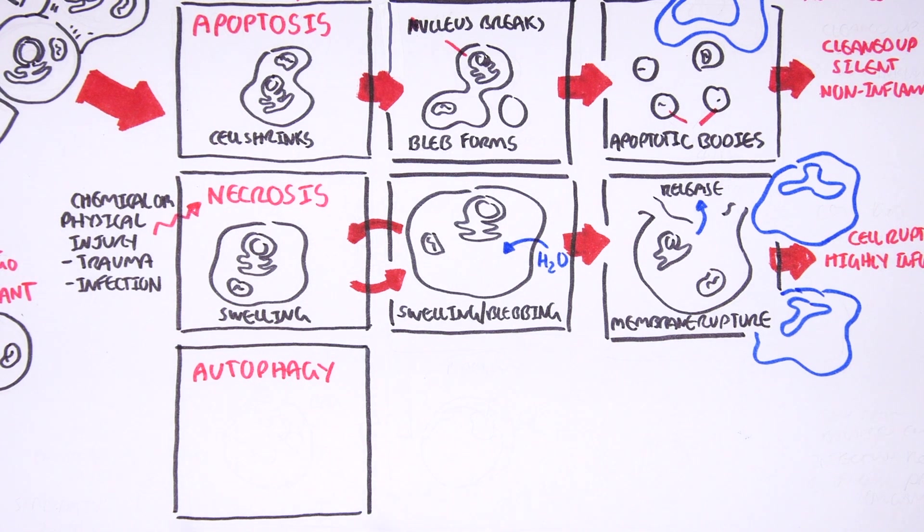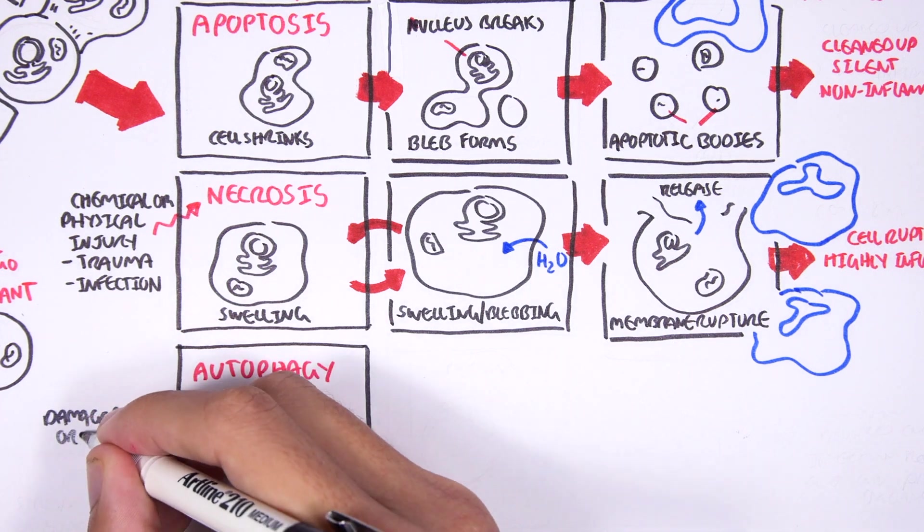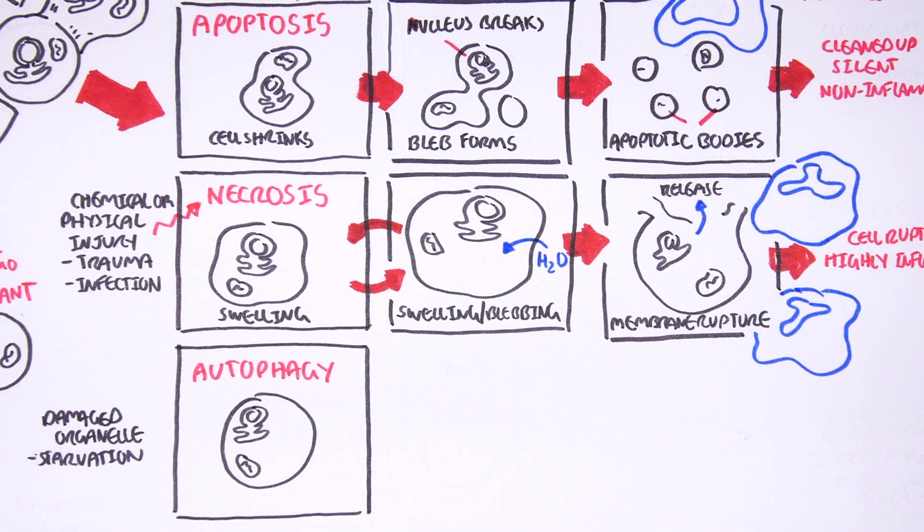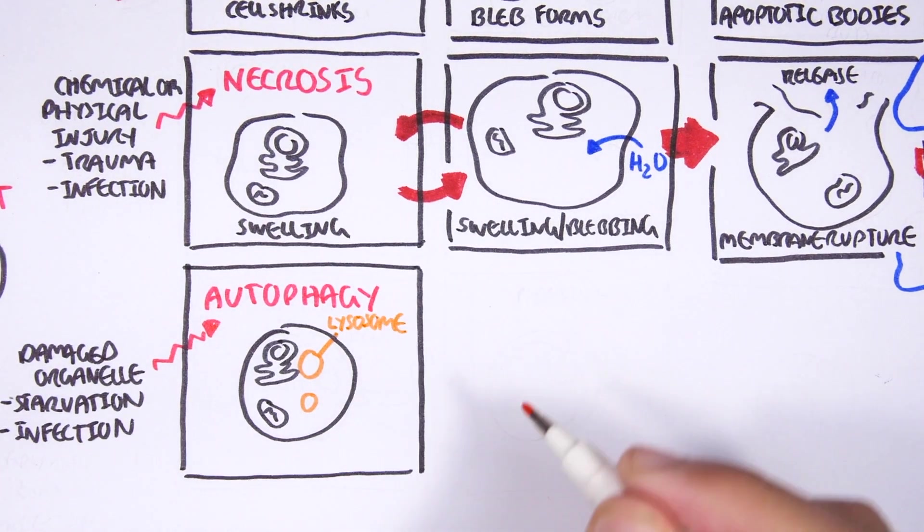Cells can also undergo autophagy. This is where within the cell you have damaged organelles specifically. So the cell itself is not damaged, just the organelles within it is damaged, either through starvation or infection. If this happens, the cell does not want to keep these organelles and so it will undergo autophagy.